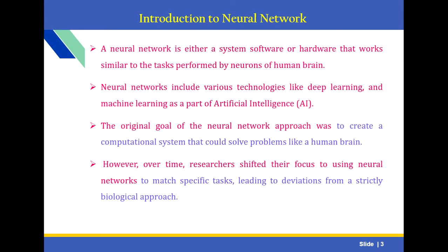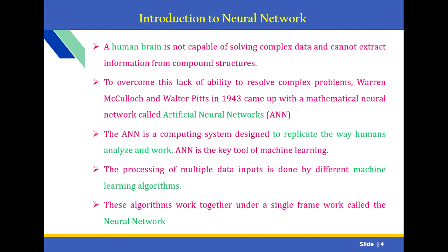Introduction to Neural Networks. What is a Neural Network? A Neural Network is either a system software or hardware that works similar to the task performed by neurons of the human brain. Neural Networks include various technologies like Deep Learning and Machine Learning as part of Artificial Intelligence. The original goal of the Neural Network approach was to create a computational system that could solve problems like a human brain. However, over time, researchers shifted their focus to using neural networks to match specific tasks, leading to deviations from a strictly biological approach. A human brain is not capable of solving complex data and cannot extract information from compound structures. To overcome this, Warren and Walter in 1943 came up with a mathematical neural network called Artificial Neural Networks, now called ANN.